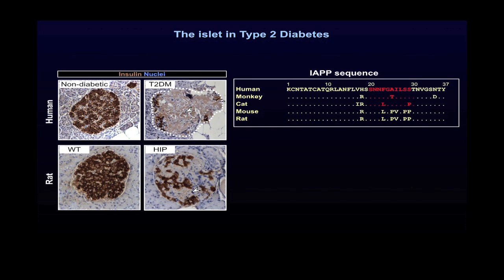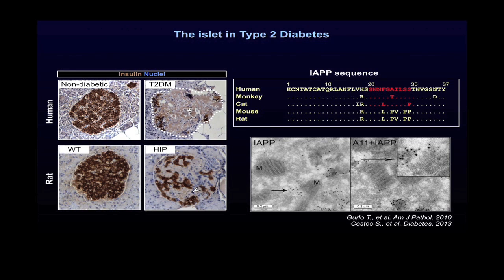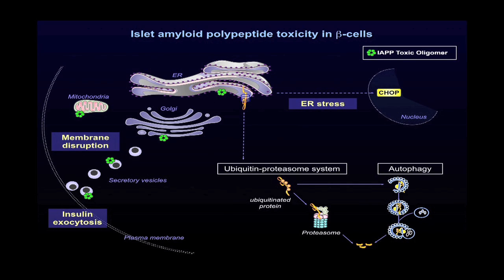In addition to extracellular IAPP deposits that are rather inert, findings in our laboratory show that IAPP toxic oligomers are present intracellularly in beta cells of human subjects with type 2 diabetes, as you can see here on this electron microscopy image. Among the pathways involved in IAPP toxicity in beta cells, we recently showed that amyloidogenic IAPP leads to an alteration of the pathways of protein clearance known as the ubiquitin proteasome system and the autophagy pathway. However, it remains unclear whether these pathways are involved in IAPP clearance in beta cells.